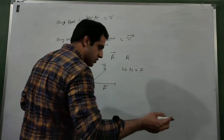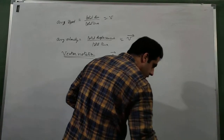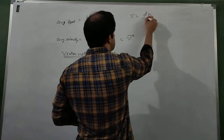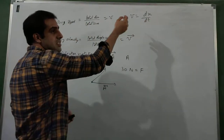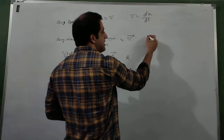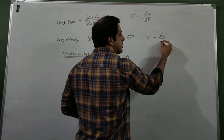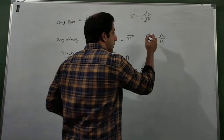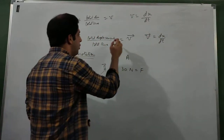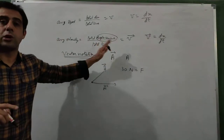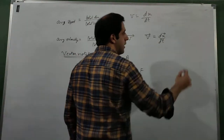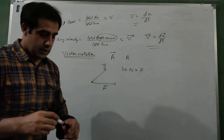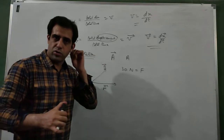For instantaneous speed: v equals dx/dt — no vector sign, so it is speed. For instantaneous velocity, it is also dx/dt but it is a vector quantity, so we put an arrow above v. We also know it equals total displacement over time, and since displacement is also a vector quantity, we put a vector sign on displacement as well. This gives instantaneous speed versus instantaneous velocity clearly distinguished by the vector notation.